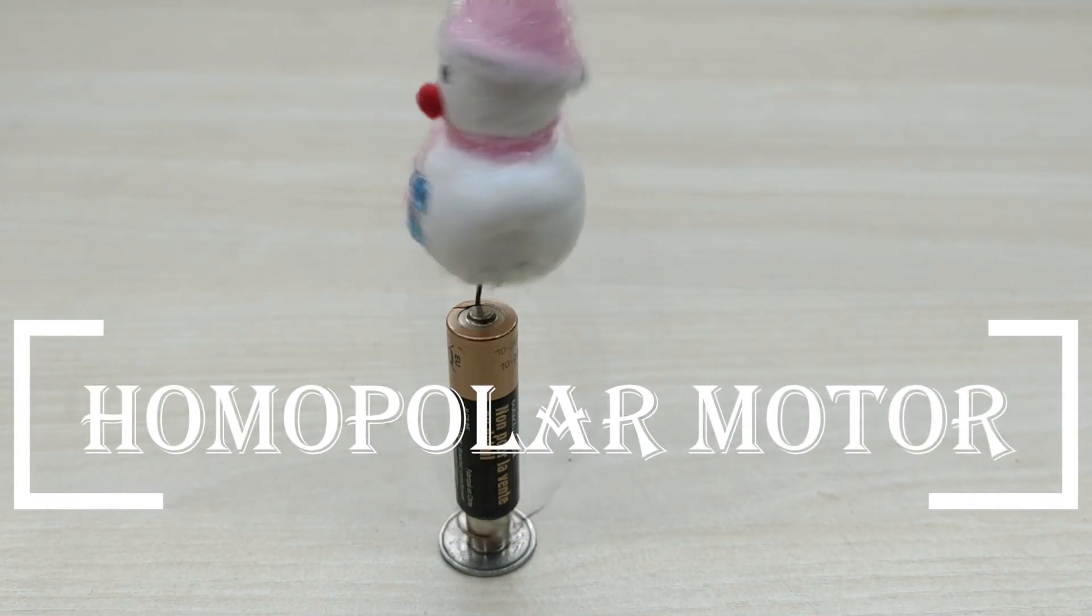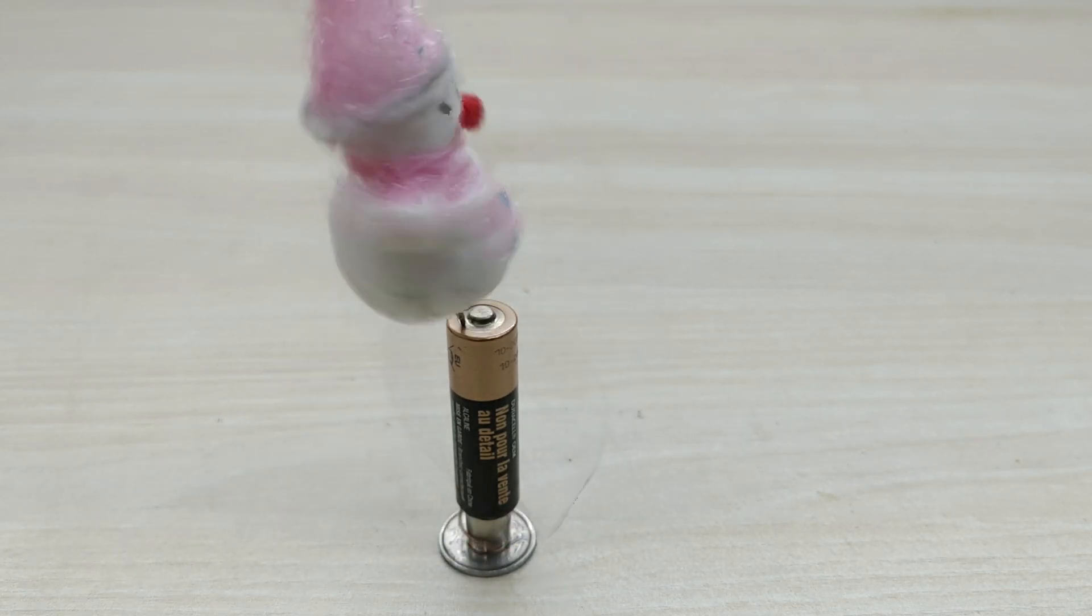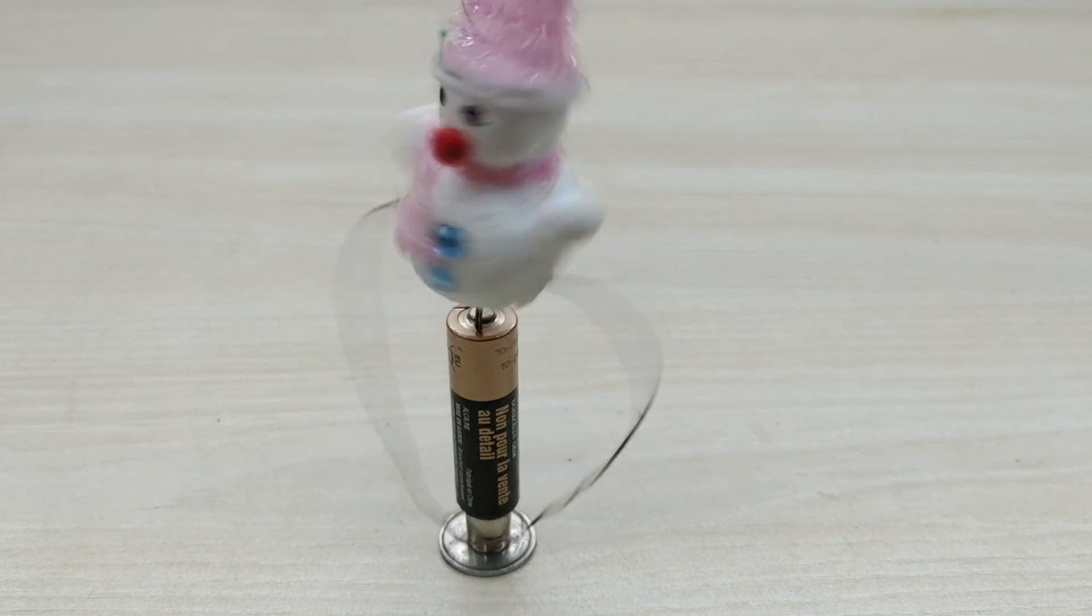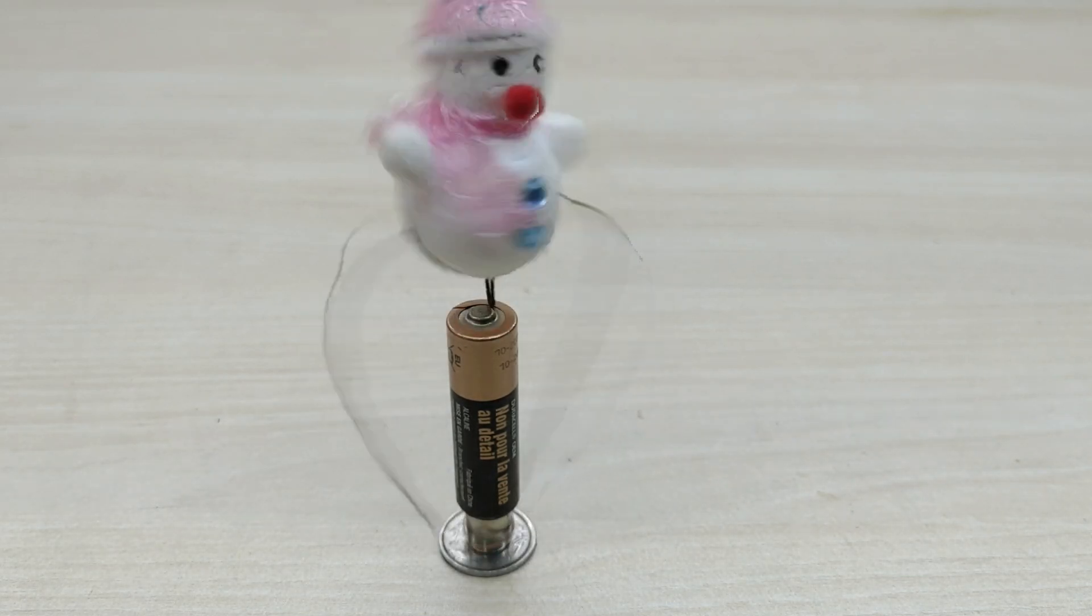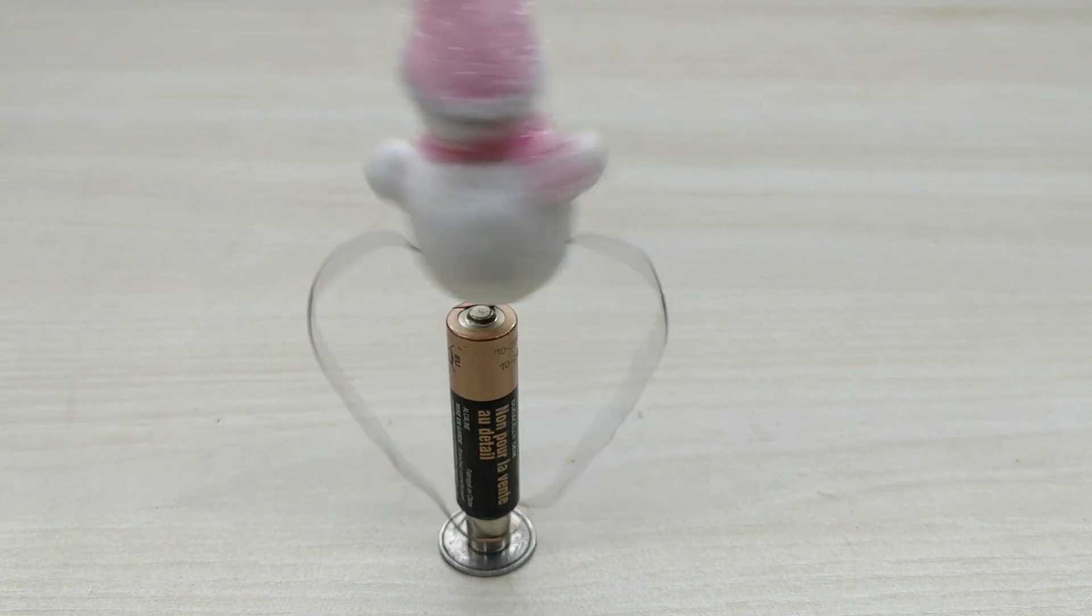Today, I am going to show you how to make a homopolar motor. A homopolar motor is one of the simplest motors that can be made. This is a very cool DIY science project in which a copper wire rotates continuously by drawing direct current from a battery.